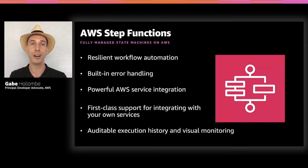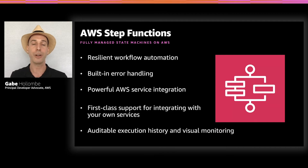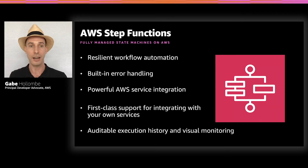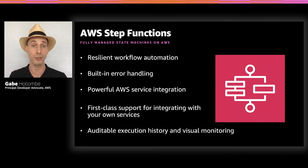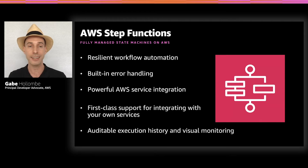AWS Step Functions lets you do fully managed state machines in the cloud on AWS. There are a lot of benefits to encoding your workflows into state machines running in Step Functions. It's useful for orchestrating not just between AWS services that Step Functions knows how to integrate with natively, but also any of your own services — as long as they can communicate with the Step Functions API, Step Functions can orchestrate work through those services as well.